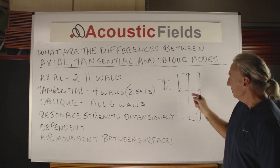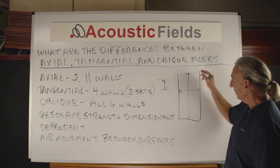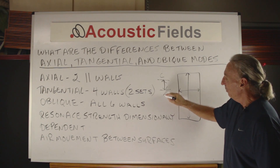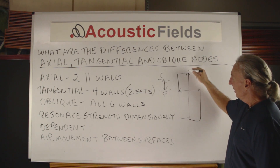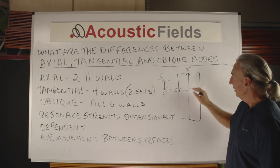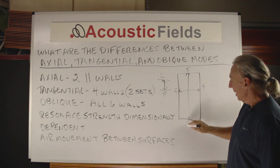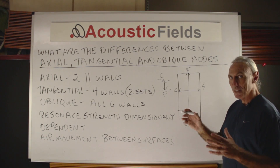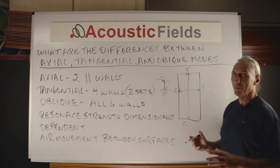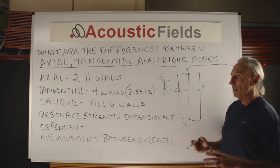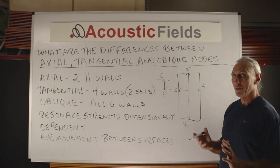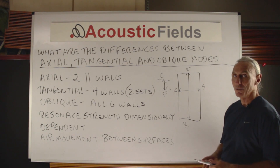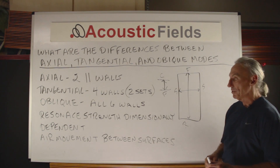Oblique is between all six walls. So we have ceiling, floor, front, sides, and rear wall. So we have three sets of pressure areas going on within the room. If you think about it, a room has six sides, so it will produce three sets of energy pressure relations.